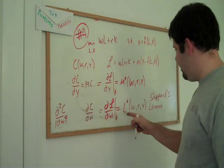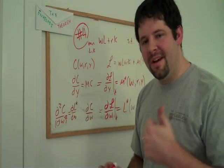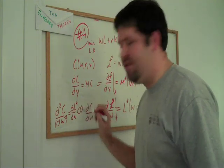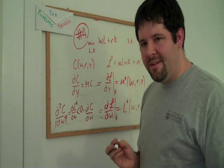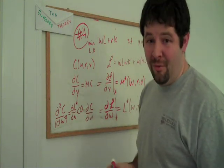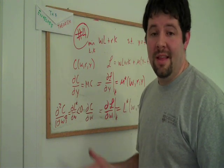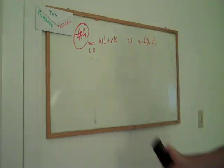Through Shepard's Lemma, that's equal to. And because we have this concavity, we've shown a conditional factor demand slope downward. When you raise the wage, the firm will actually demand less. So that's just a nice little corollary from this.